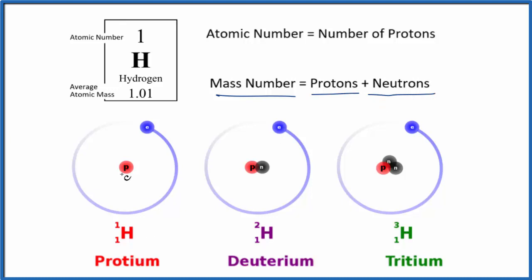So for protium, we just have a proton, so the mass number is one. And we write that here above the atomic number, the number of protons. For deuterium, we have a proton and a neutron, one plus one. That gives us a mass number of two.